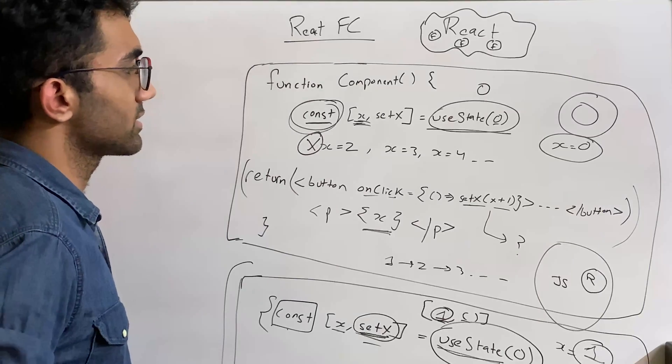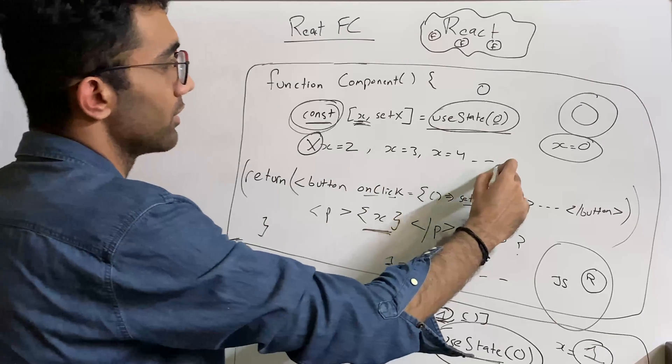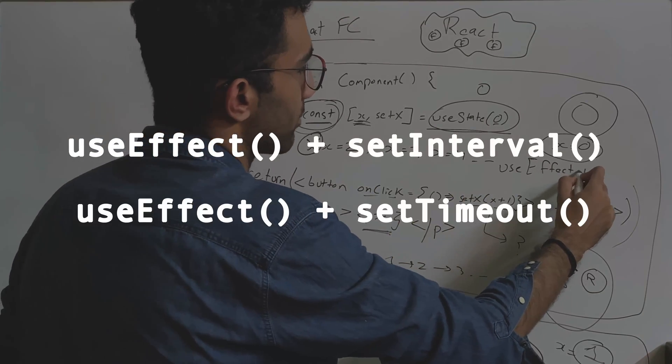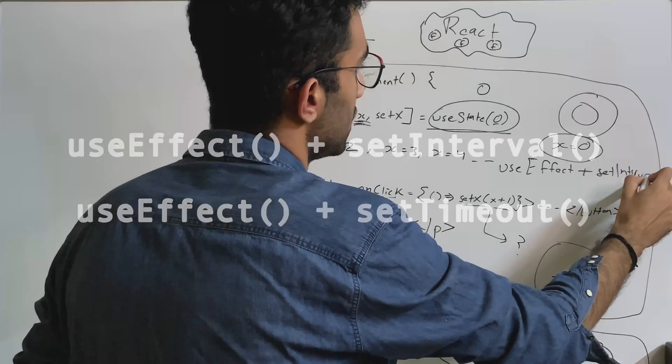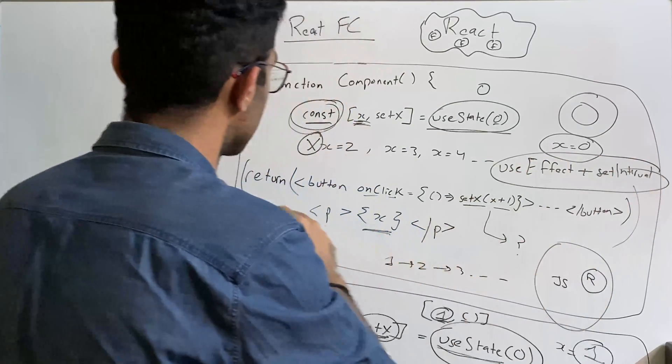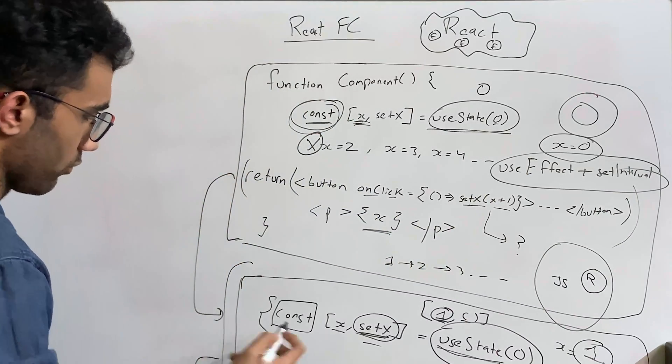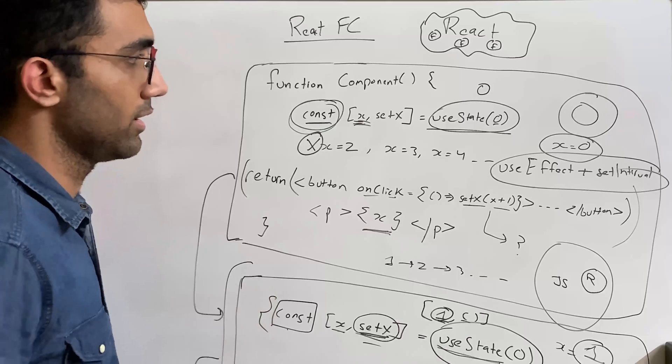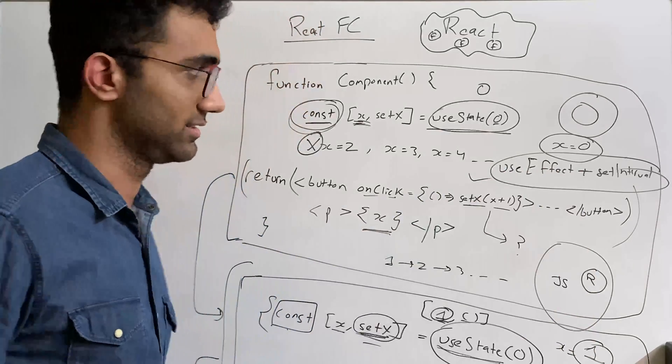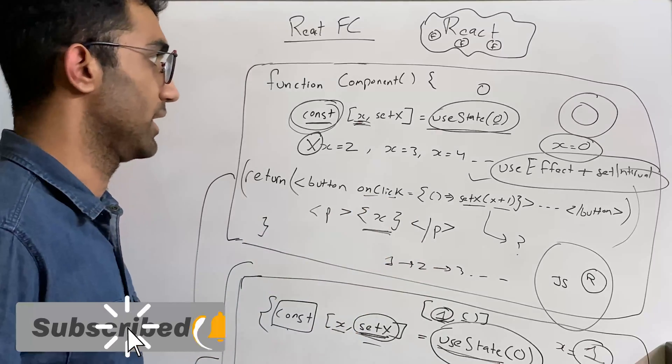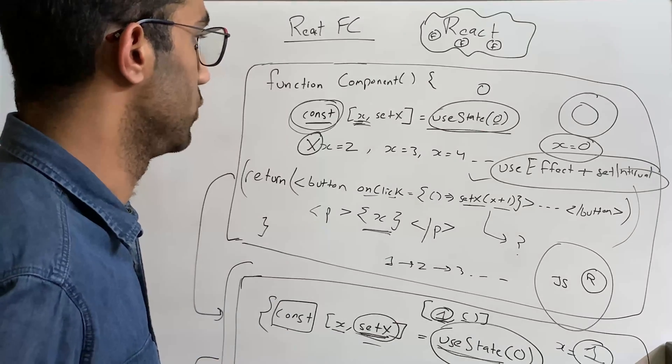So this is how functional components work and this is why you are also able to use const within the function components because it does not mutate the variable, it actually creates a whole new function. There are very interesting use cases which happen when you use, for example, like I said, when you start using useEffect and useEffect plus setInterval or setTimeout, when you use this stuff, you actually understand how this behavior really works, how this transition really happens from one function to another and so on. But yeah, this is something for another day, maybe a bit of more practical instead of this theoretical understanding, but yeah, I mean, I hope that you've got the idea how react functional components actually work.